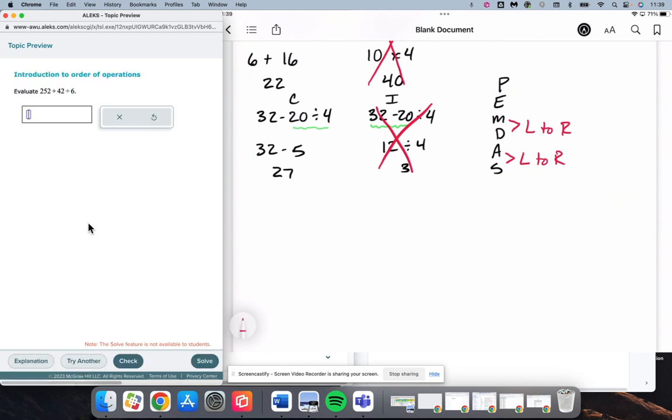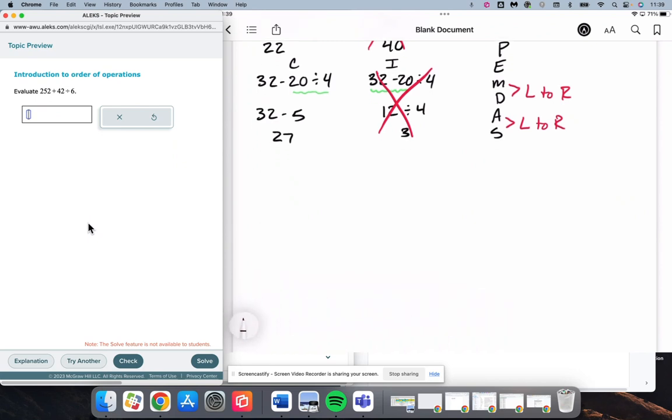One more and we will call it good for this one. 252 plus 42 divided by 6. This is another one that I'm going to do correctly and incorrectly and see what happens. So correct will be on the left, incorrect will be on the right. 252 plus 42 is 294 divided by 6 is going to be 49.